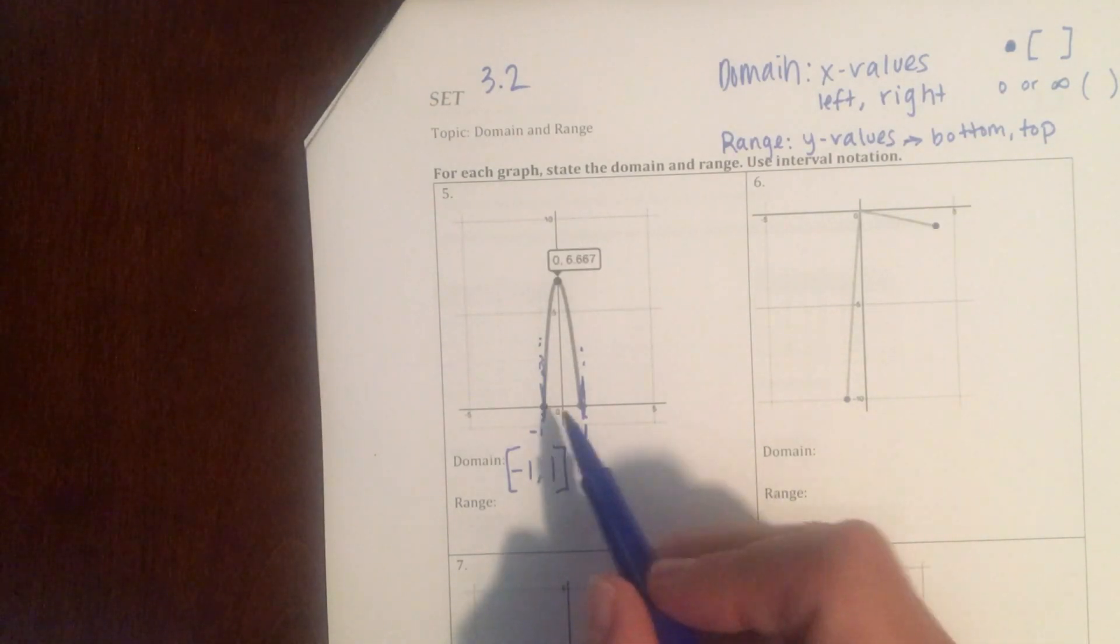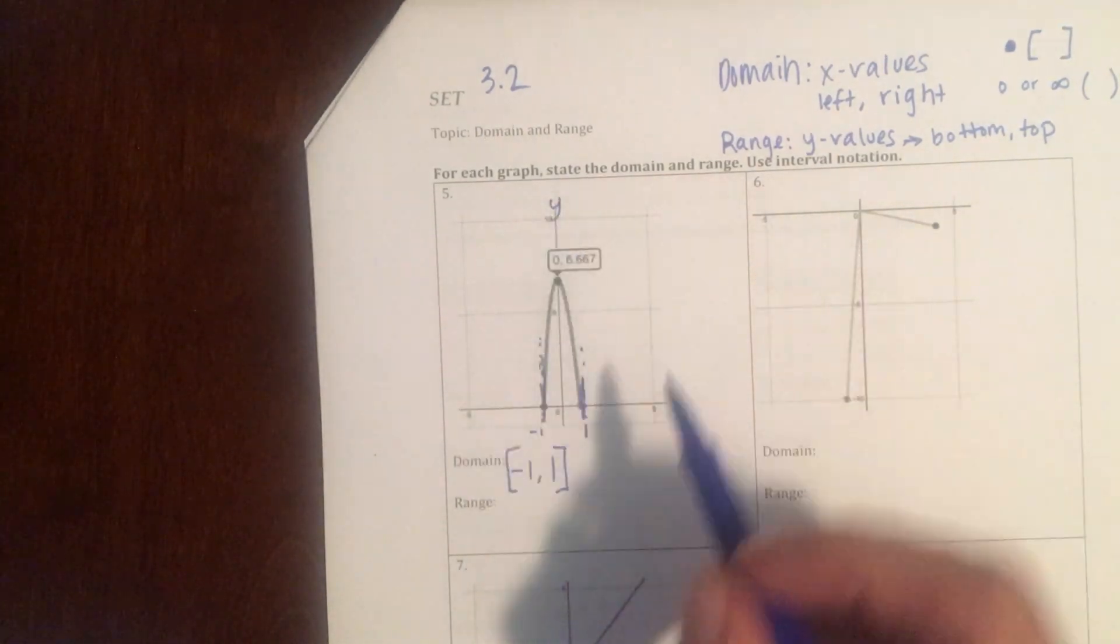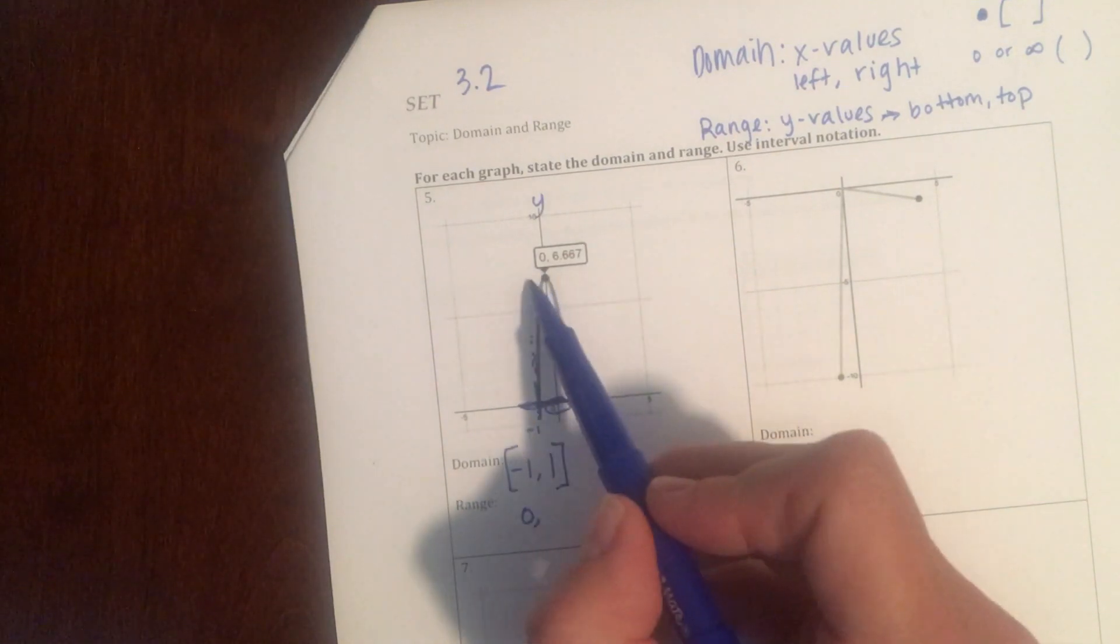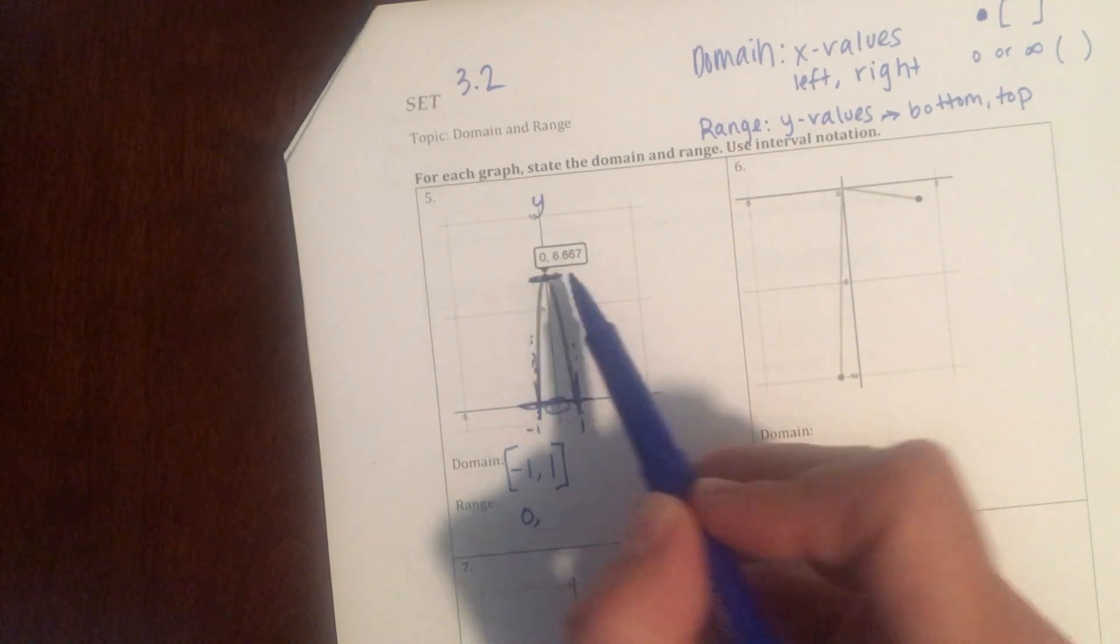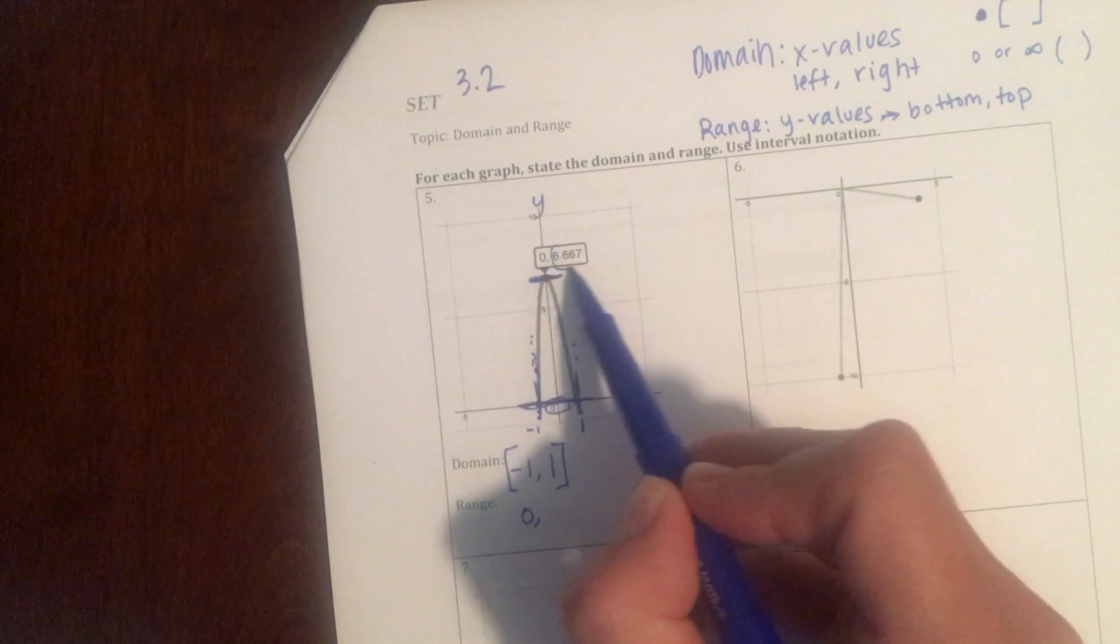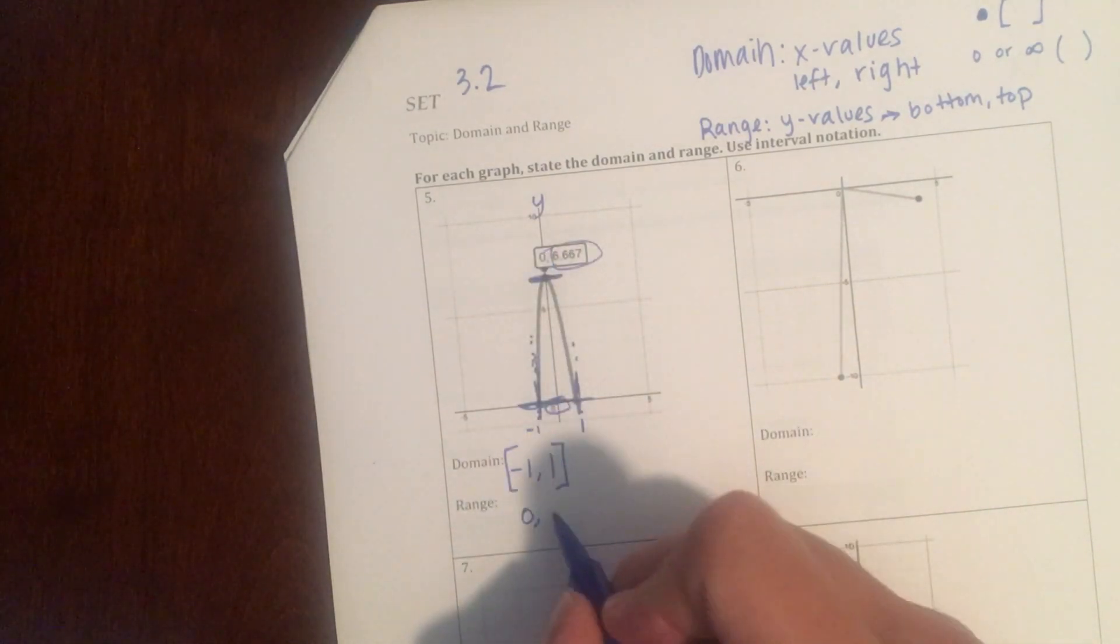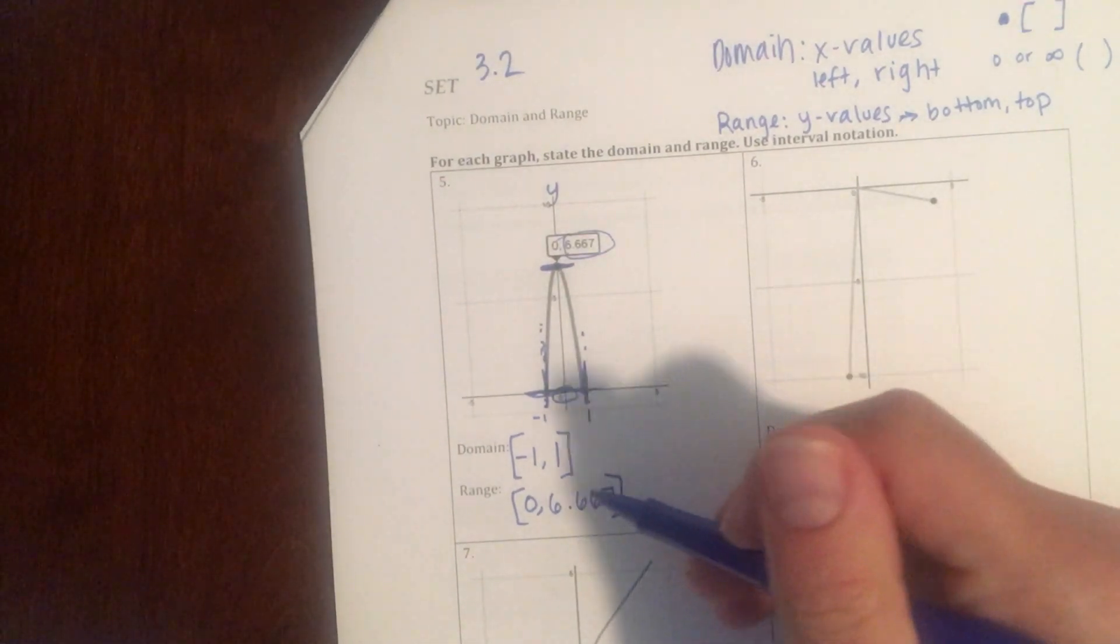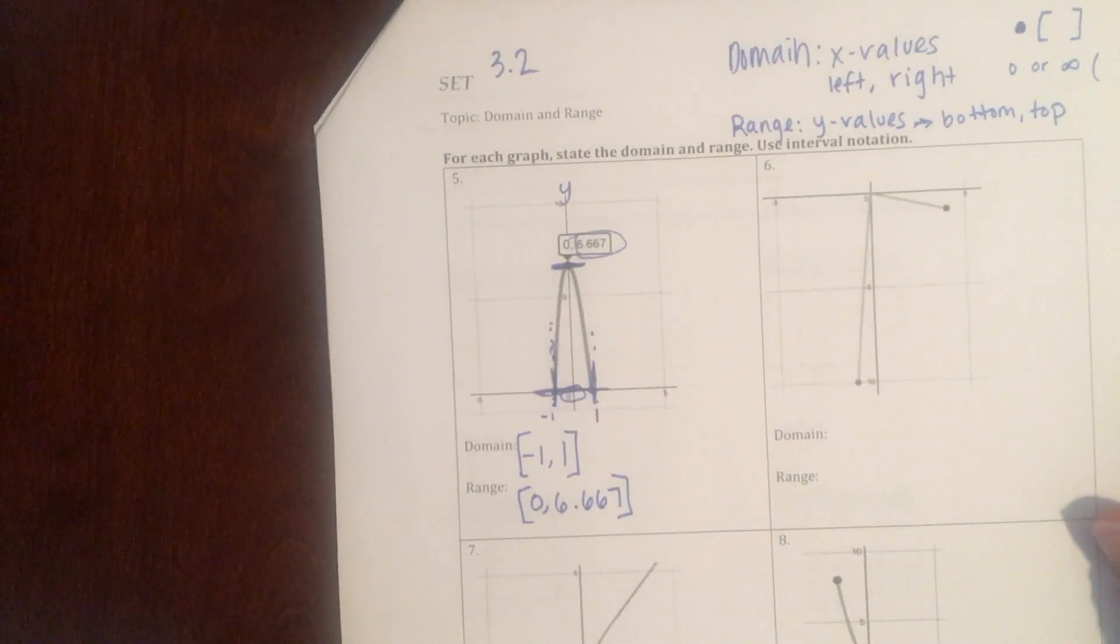All right, range is the y values. So I'm going to look at my y axis and see how low does the graph go. And that's y equals 0. And then how high the graph goes. And that one's a decimal, so they actually give us the answer right there. 6.667. And we have all closed dots, no open dots. So we put brackets around those numbers. So these are the intervals in which our graph lies.